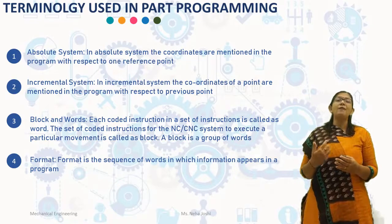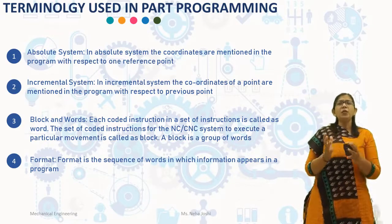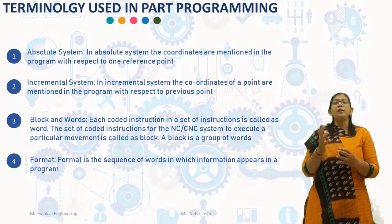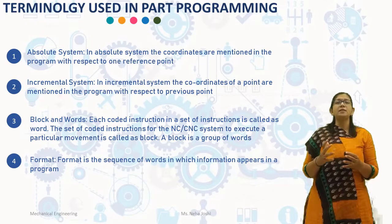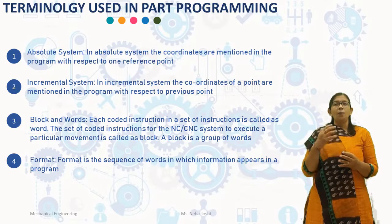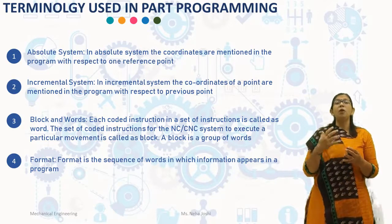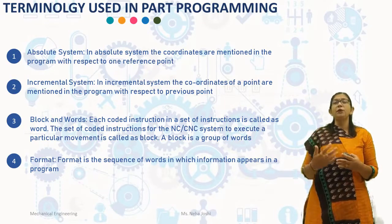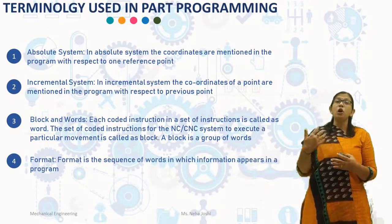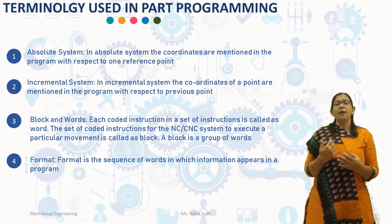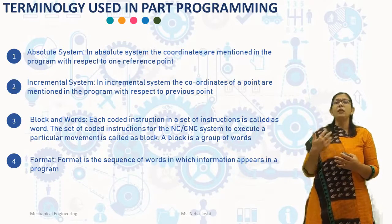The third terminology is block. Each coded instruction in a set of instructions is called a word. The set of coded instructions for the NC/CNC system to execute a particular movement is known as a block. A block is a group of words. The words in a block are: sequence number, preparatory functions, coordinate functions, speed functions, spindle functions, tool functions, and miscellaneous functions. The last terminology is format. Format is a sequence of words in which information appears in a program.